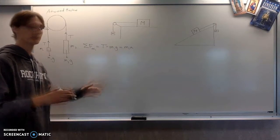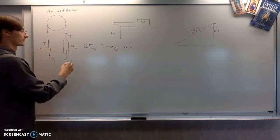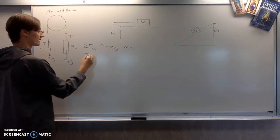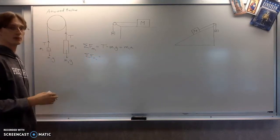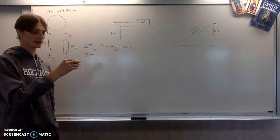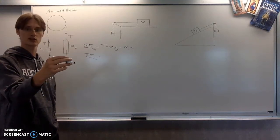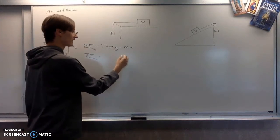Now we'll do the same thing with object number two. Now for this one, a rookie mistake would be writing the two forces in the exact same order. If you put T minus M2g equals M2a, you've got everything in there, but in the wrong order.